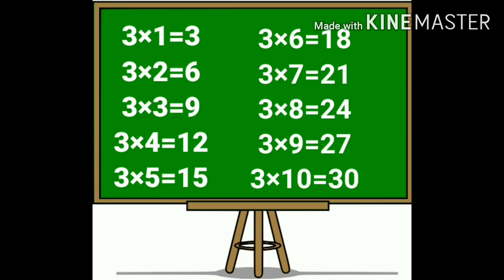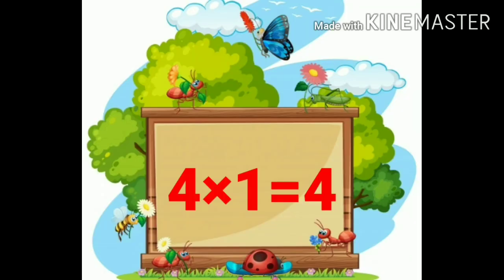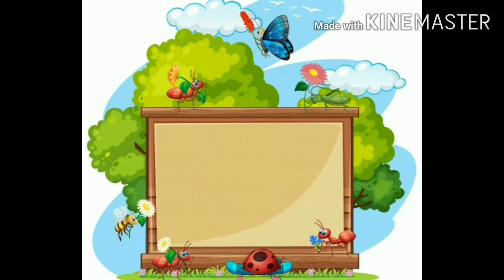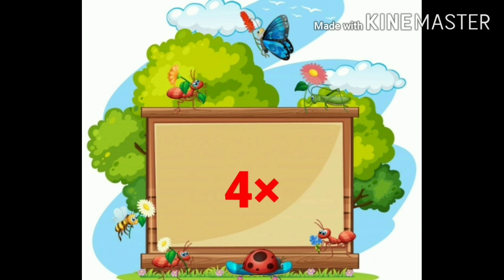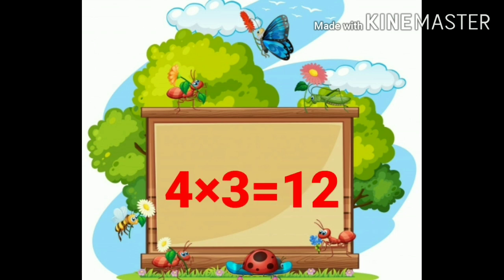Three sevens are twenty-one. Three eights are twenty-four. Three nines are twenty-seven. Three tens are thirty.